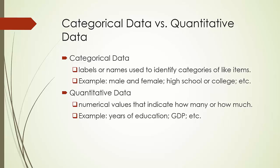First, let's make sure we understand the difference between categorical data and quantitative data. Categorical data are labels or names used to identify categories of like items. For example, the gender of a customer — male or female — or the education level of an employee: high school or less, or college or higher, etc.